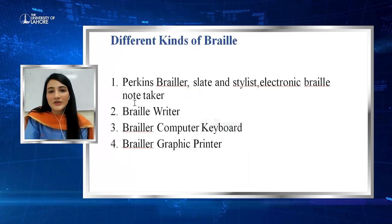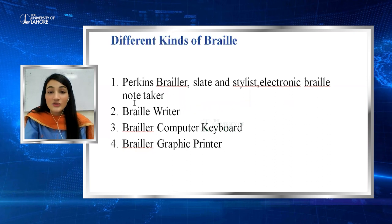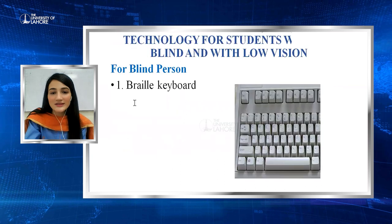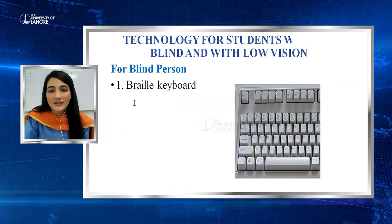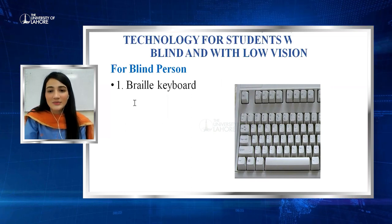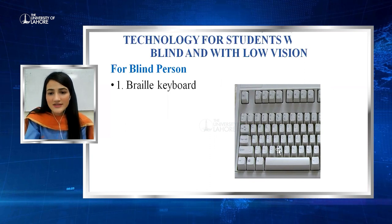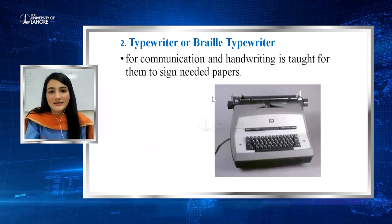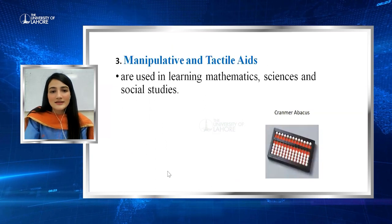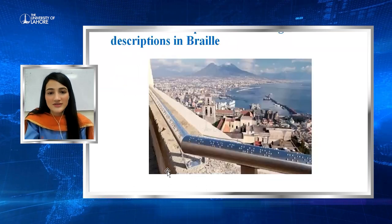There are different kinds of Braille tools for blind and visually impaired persons used in rehabilitation: Perkins brailler, slates, stylus, electronic Braille, Braille writer, Braille computer keyboard, and Braille graphic printer. This is a Braille keyboard — you can see raised dots on the keys. This is a Braille typewriter for communication and writing. These are manipulative tactile aids used in learning mathematics, sciences, and social studies for students.